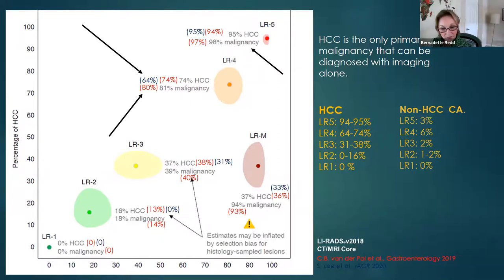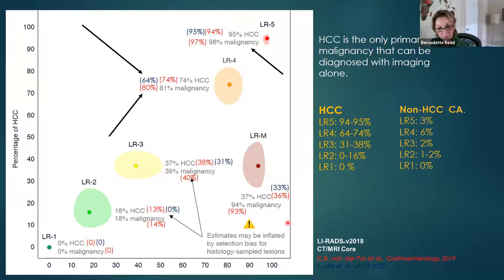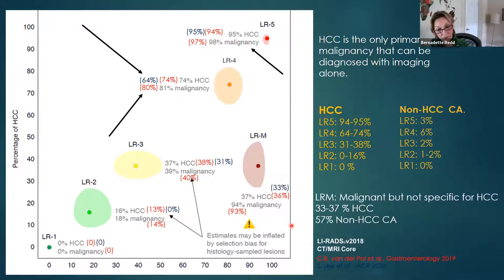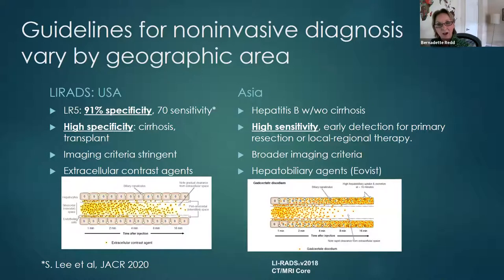I'd like to draw attention to the LIRADS-M group — liver observations that look like cancer but are not typical of HCC. A significant percentage of these turn out to be HCC — about 33 to 37% — but don't look as expected. Several international societies have developed guidelines in addition to LIRADS for non-invasive diagnosis of HCC. The criteria vary between geographic areas to address different target populations, resources, and treatment practices.